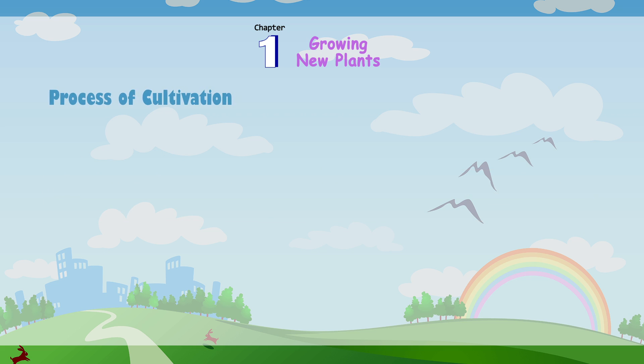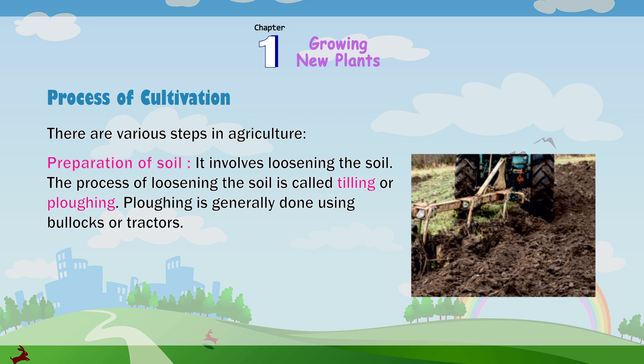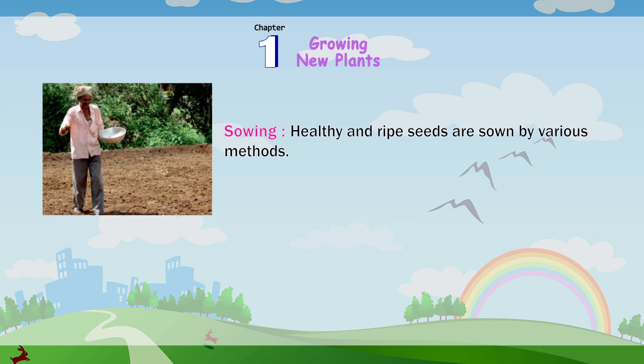Process of cultivation. There are various steps in agriculture. Preparation of soil: It involves loosening the soil. The process of loosening the soil is called tilling or plowing. Plowing is generally done using bullocks or tractors.